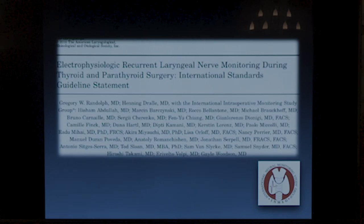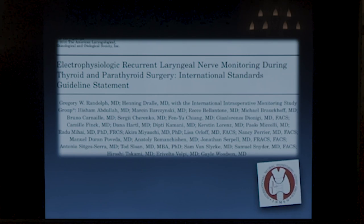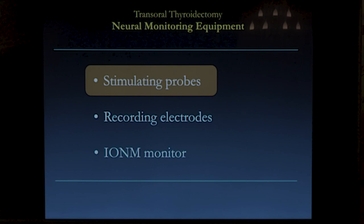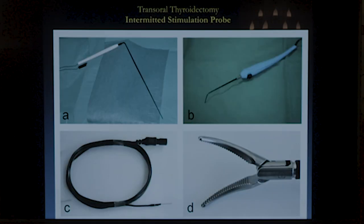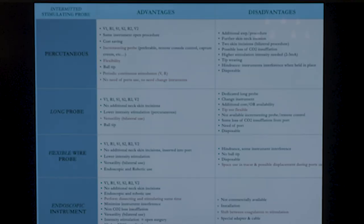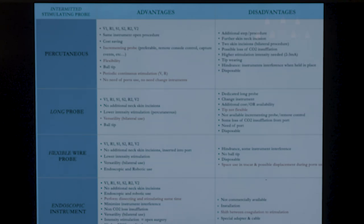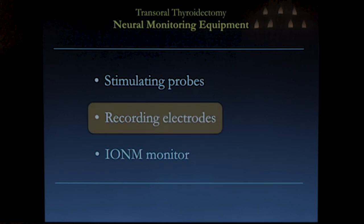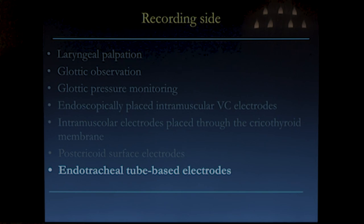These are the guidelines we wrote for the open procedure. Can these guidelines be proposed for the transoral approach? When doing the endoscopic procedure in general — not only for the transoral — the stimulating probes can be different. Each device has some pros and cons. For the percutaneous probe, there is flexibility; you can do continuous monitoring by asking your assistant to keep it close to the vagal nerve. The long probe is useful for its versatility across different trocars. For recording electrodes, we need an endotracheal tube-based electrode, as other recording options cannot be used during endoscopic procedure.